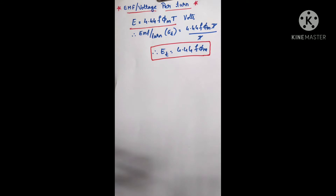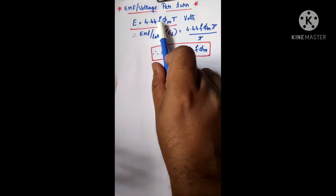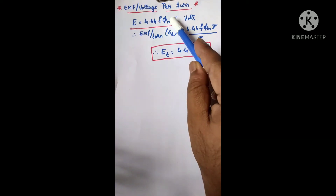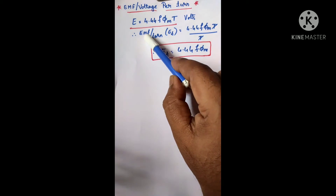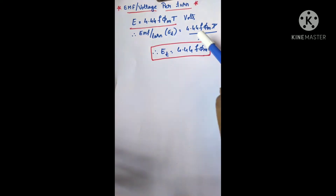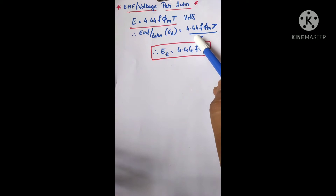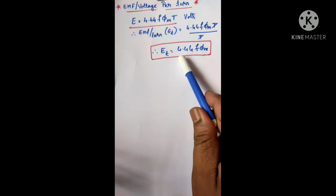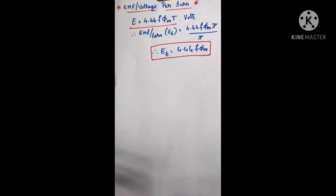Right now we need to identify the EMF induced per turn. We divide the complete expression by the number of turns to get the EMF induced per turn. So EMF per turn — in short ET — can be given as the EMF induced in the winding (4.44 × f × φm × T) divided by the number of turns T. By doing this we get ET = 4.44 × f × φm, which is the EMF induced per turn in terms of electrical parameters.